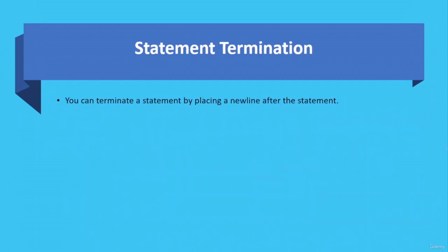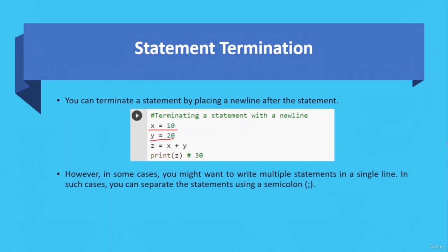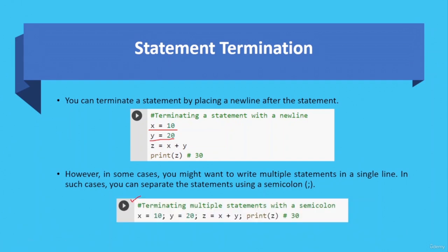You can terminate a statement by placing a new line after it, and the next statement goes on the new line. However, in some cases you might want to write multiple statements on a single line — you can separate them using a semicolon. For example, you can write x = 10; y = 20; and so on in one line, which is equivalent to writing them across four separate lines. The result is the same: the summation of x and y equals 30.